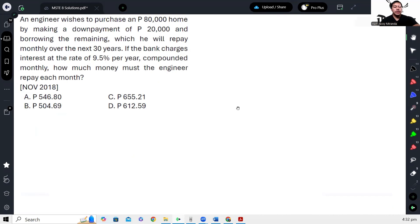Okay, next problem. An engineer wishes to purchase a P80,000 home by making a down payment of P20,000 and borrowing the remaining, which he will repay monthly over the next 30 years. If the bank charges interest at the rate of 9.5% per year compounded monthly, how much money must the engineer repay each month?